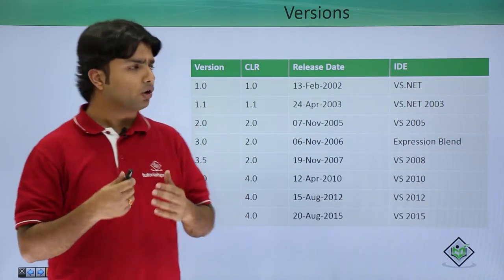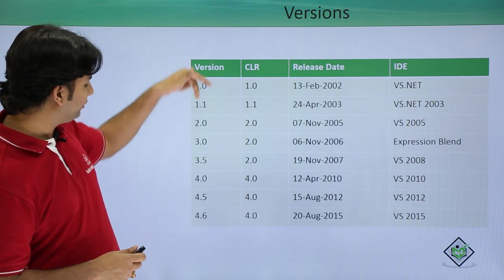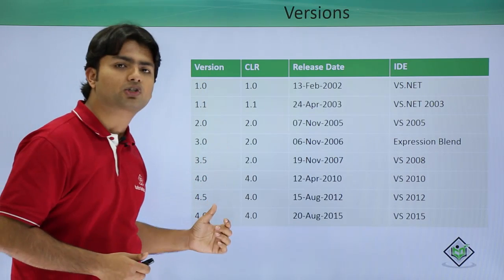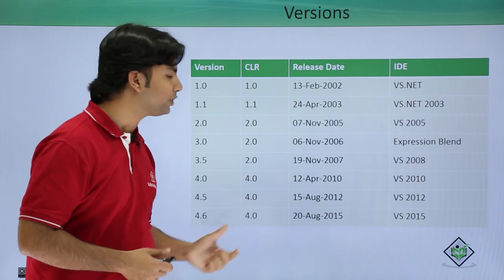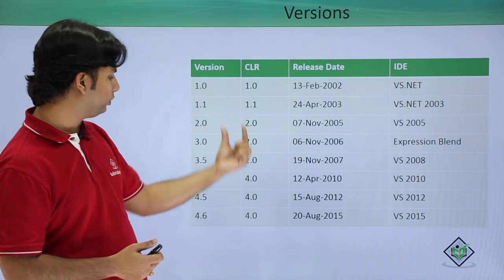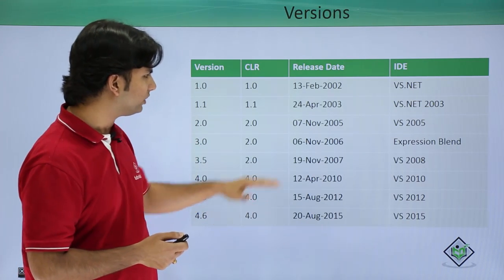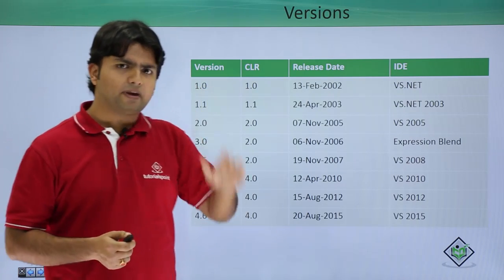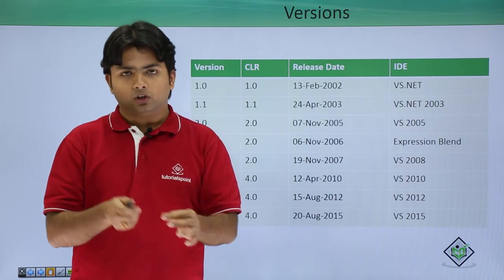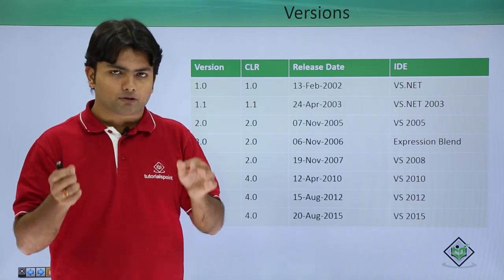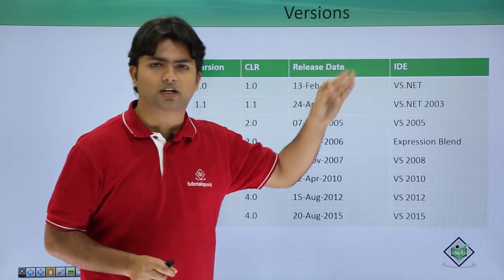Now let's look at the various versions of the .NET Framework. As you can see, from version 1.0 to 4.6, there have been various .NET Framework releases, along with various versions of the Common Language Runtime starting from 1.0 to 4.0. Whenever you want to write code using these frameworks, you need an IDE — an Integrated Development Environment.